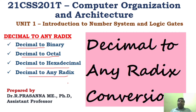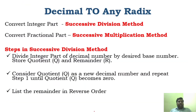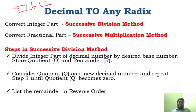You have to understand the logic of each conversion so you don't get confused. For decimal to any radix conversion, we already know what an integer part and a fractional part are. Consider the number 576.12 — 576 is the integer part and .12 is the fractional part. You have two methods: successive division method and successive multiplication method.